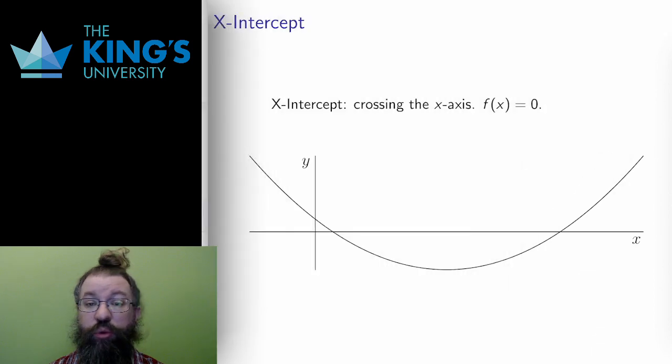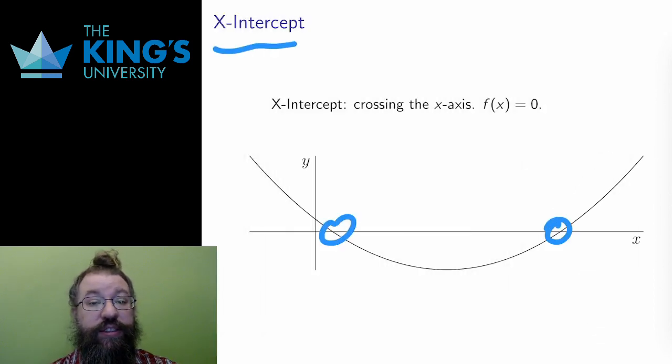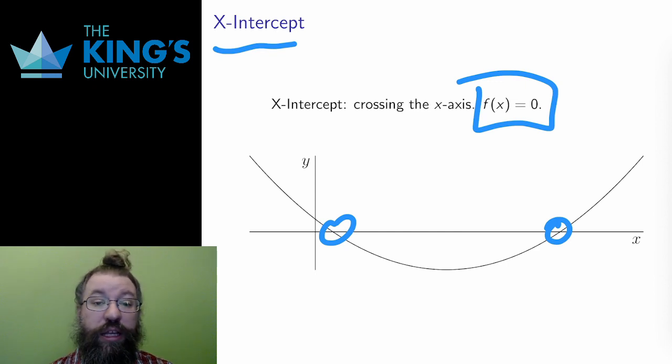An x-intercept is a place where the function crosses the x-axis. The x-axis is all points where y equals 0, so the output must be 0. Therefore, to find these, I need to calculate f of x equals 0. There can be many of these, even infinitely many for some functions. These are also called the roots of a function, particularly when the function is a polynomial.